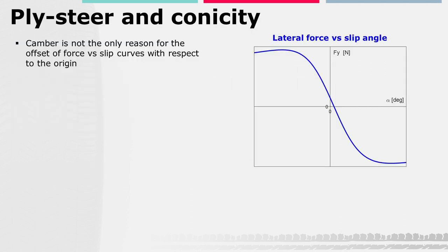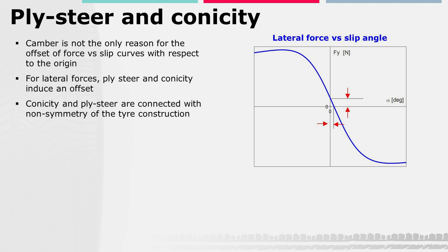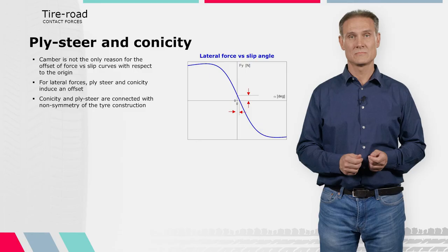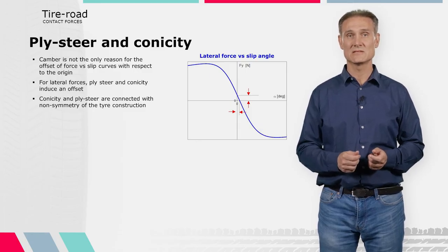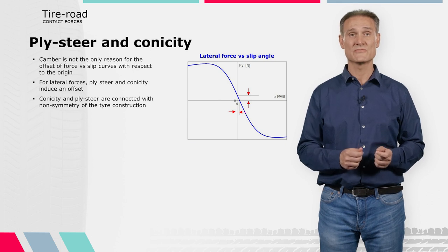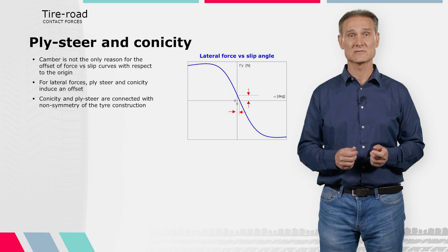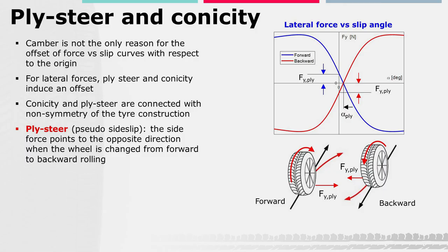Camber is not the only reason for the offset of the lateral force versus slip angle curve with respect to the origin. Ply steer and conicity also offset the curves from the origin, and are connected with non-symmetry of the tire construction. Ply steer is a deterministic quantity detectable early during tire design. Conicity is randomly caused by small variations in manufacturing tolerances. If the tire exhibits ply steer, the generated lateral force Fy-ply points in the opposite direction when the wheel is rolled forward or backward, similar to a tire undergoing a slip angle α-ply.